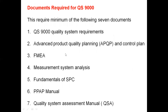The documents required for QS 9000 are: first, the standard itself; second, Advanced Product Quality Planning (APQP) and control plan; third, FMEA - Failure Mode and Effects Analysis; fourth, Measurement System Analysis (MSA) covering how measurement is available and analyzed in your company; fifth, fundamentals of Statistical Process Control (SPC); sixth, PPAP manual; and seventh, Quality System Assessment manual.